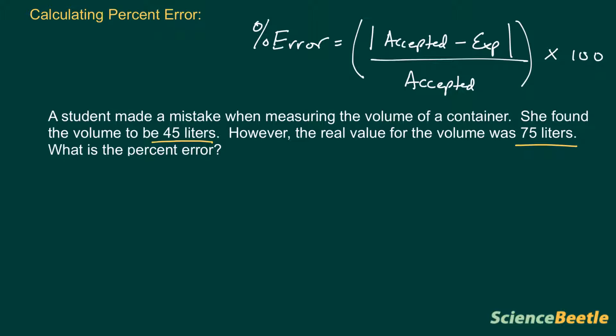Now if she found this, here's another keyword for you: found. These are words that we use when we're actually conducting the experiment. So we find these results, we gather these results. In this particular case, the word found indicates to us that this number, the 45, is going to be the number that was obtained during the experiment. In other words, this is the experimental value. And if we look at the 75 liters, notice the keywords here: the real value. So this is going to be the accepted.